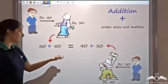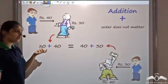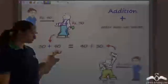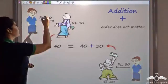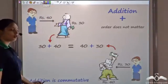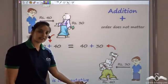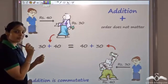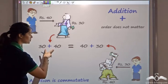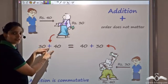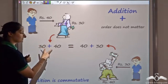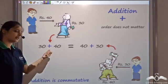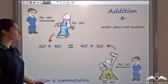Order does not matter. Whether you add 40 to 30 or 30 to 40, the value does not change, and hence addition is commutative. Commute means you can move to and fro about a point — you can exchange 30 and 40 about this addition symbol. You can exchange the places without the value being changed.